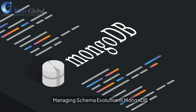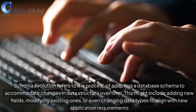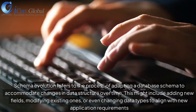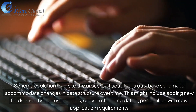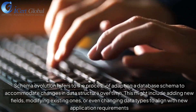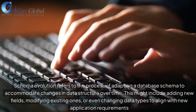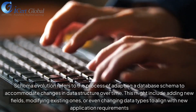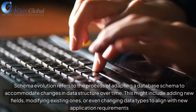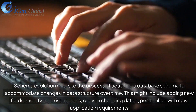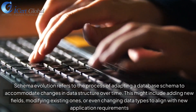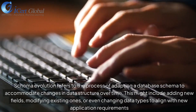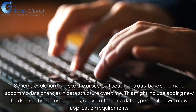Managing schema evolution in MongoDB. Schema evolution refers to the process of adapting a database schema to accommodate changes in data structure over time. This might include adding new fields, modifying existing ones, or even changing data types to align with new application requirements.